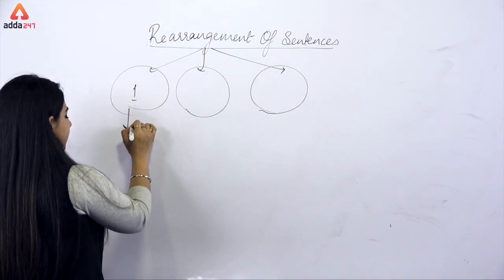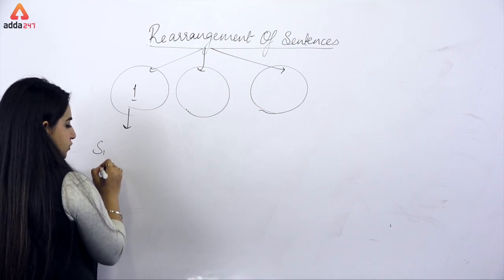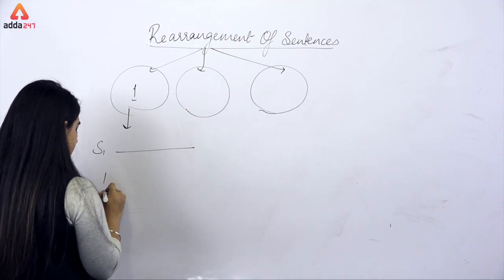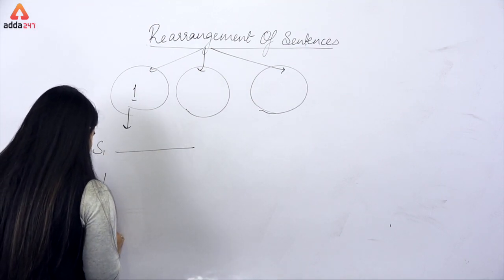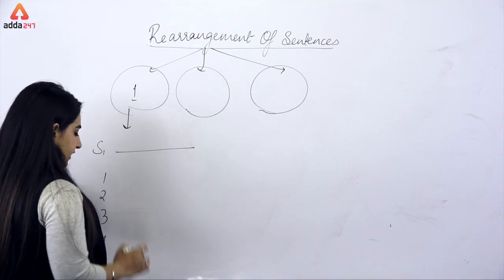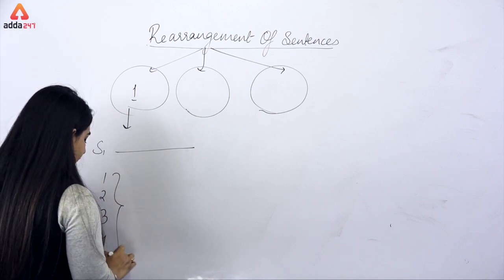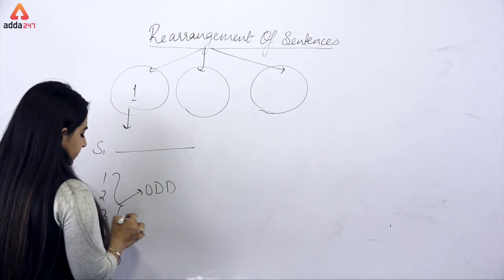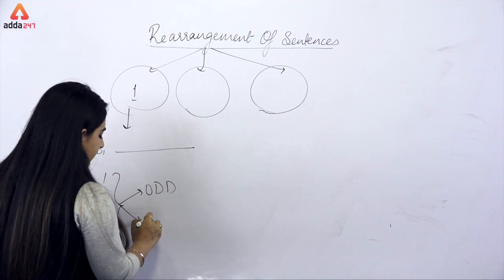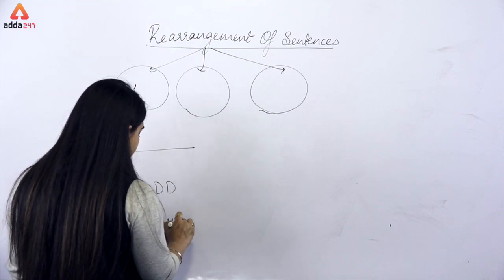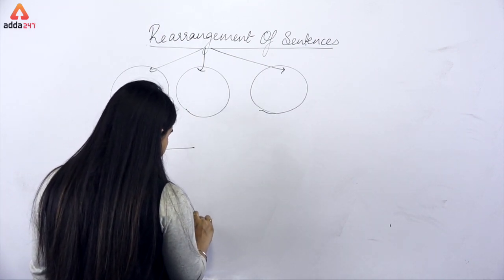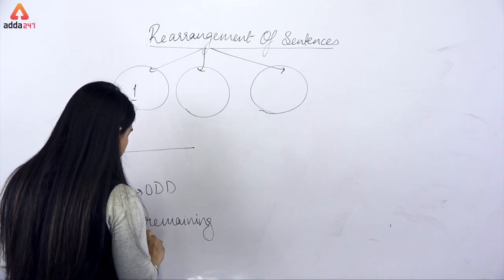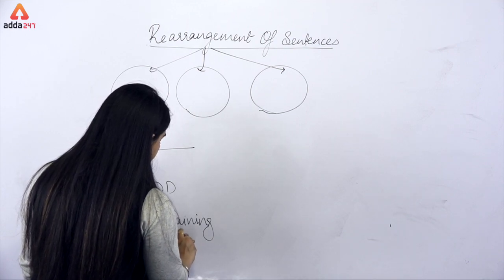The first pattern is where sentence one is always already given, and you are left with four sentences. From those four sentences, first of all you have to find out the odd sentence, and then rearrange the remaining ones.